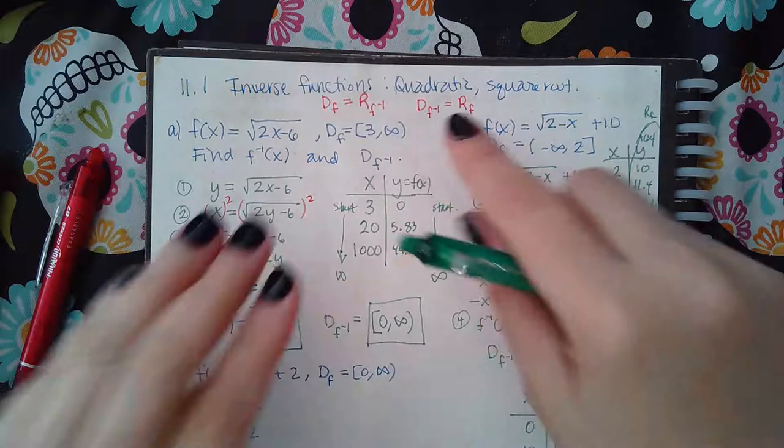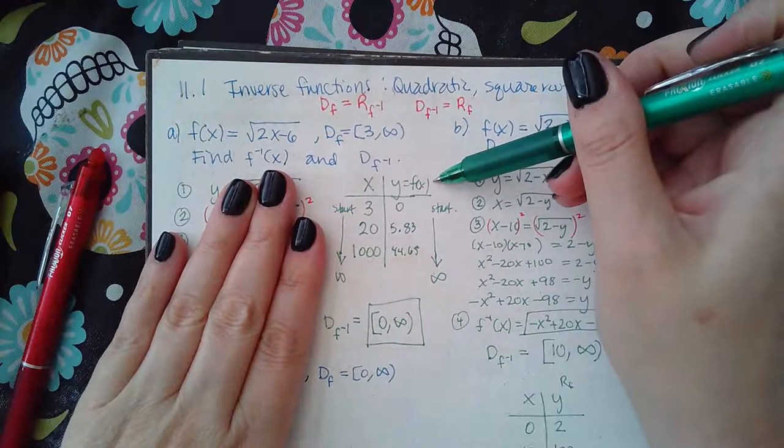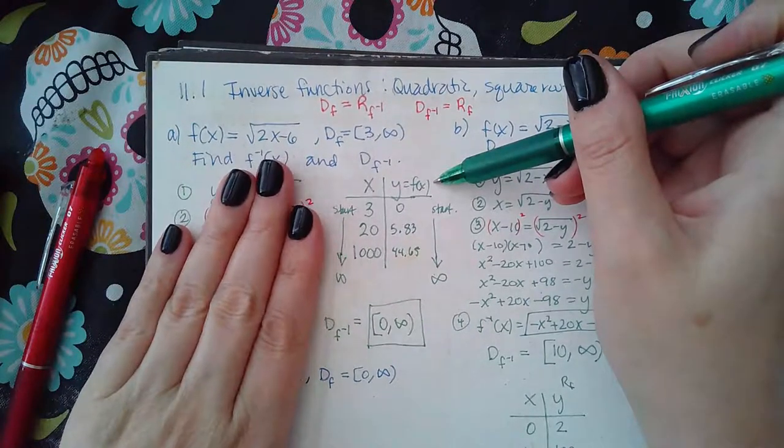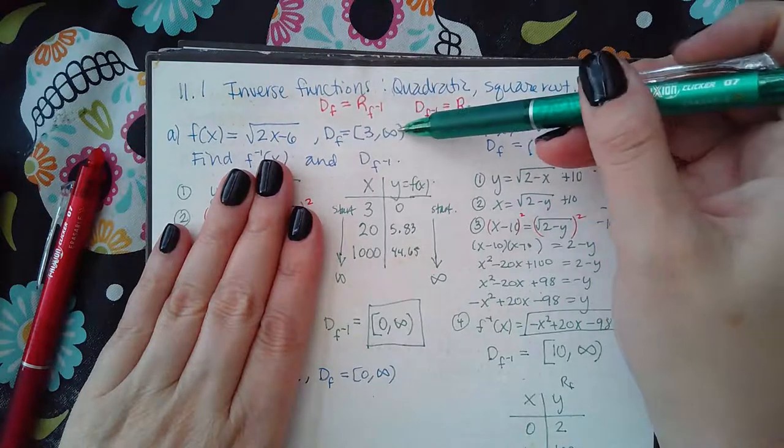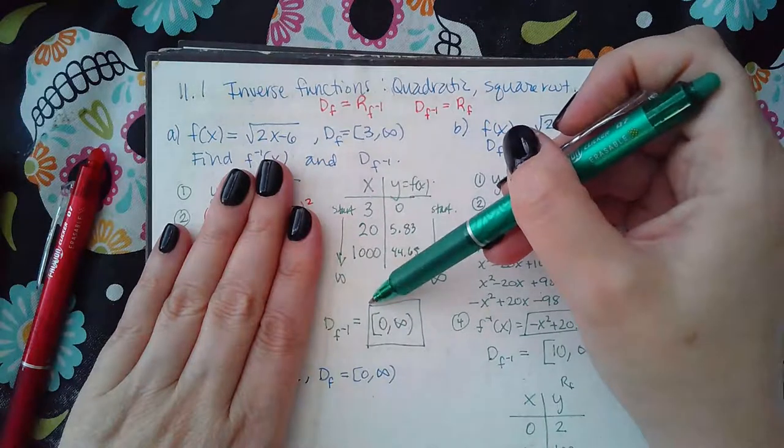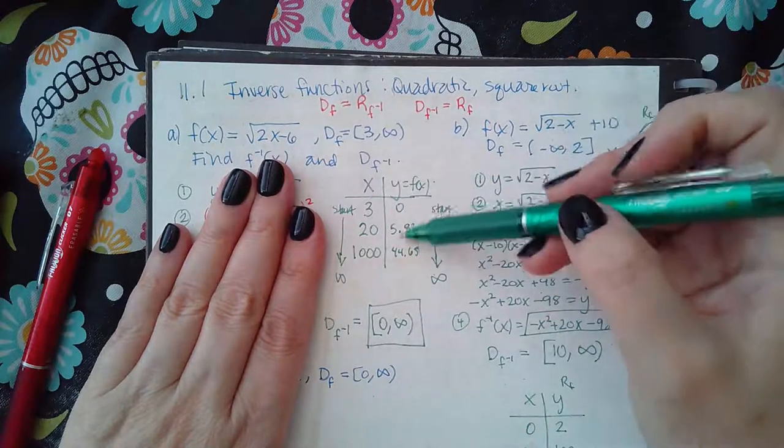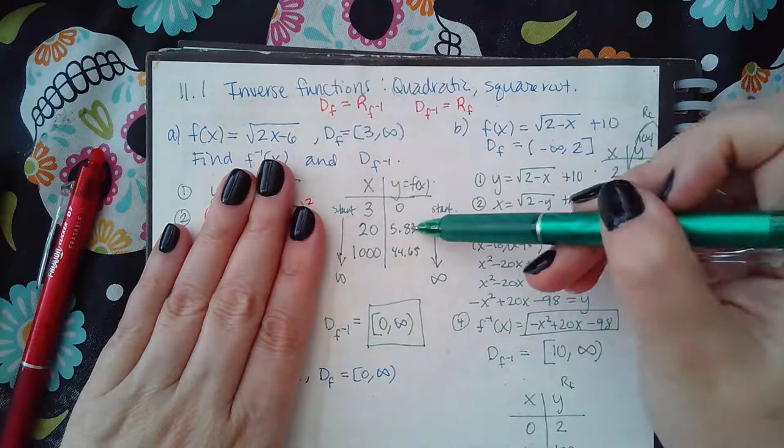And so what I've done for each of these problems is I created a table using the f function, so not the inverse function, and then I use these values. So I need to plug in 3, and the numbers bigger than 3. So I plugged in 3, 20, 1,000, it could have been a million, whatever.